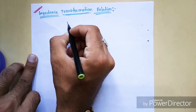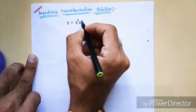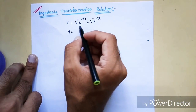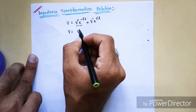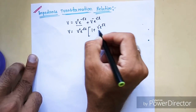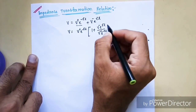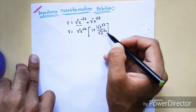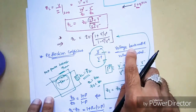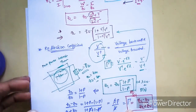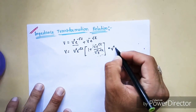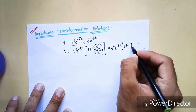We know from the wave equation that v equals v+ times e^(-γl) plus v- times e^(γl). Taking v+ e^(-γl) as common, I can write this as v+ e^(-γl) times (1 + v- e^(γl) / v+ e^(-γl)). This ratio is equal to the reflection coefficient, as already derived — voltage backward by voltage forward. So I can write this simply as v+ e^(-γl) times (1 + ρ(l)).